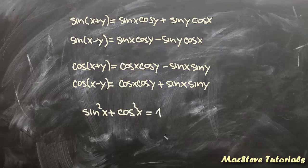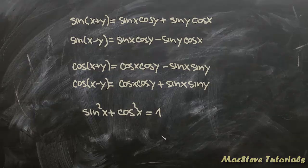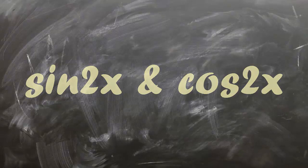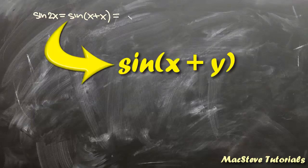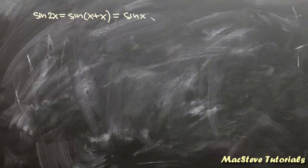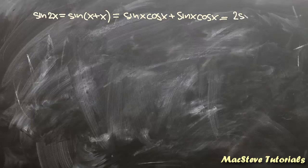Now let me show you how to use them to find all other identities. Let's find sin2x. Write it as sin(x+x), then expand using the formula for sin(x+ε). You get sinx·cosx + sinx·cosx, which added together gives 2sinx·cosx.